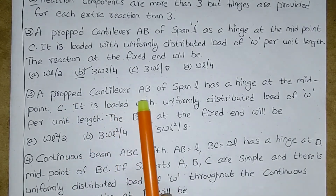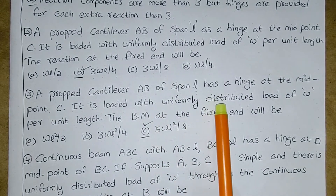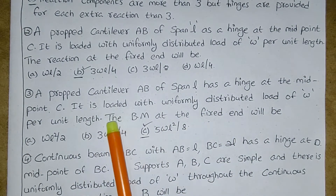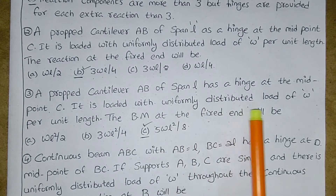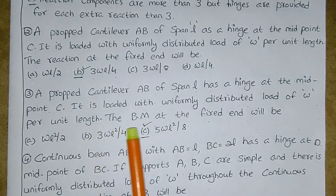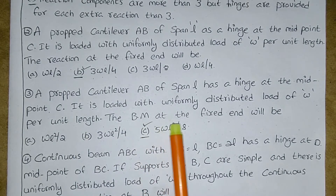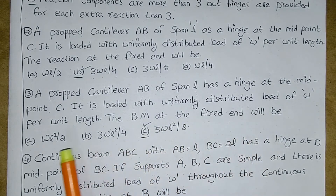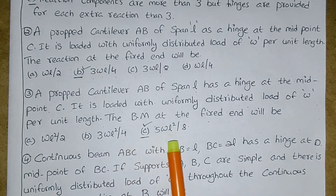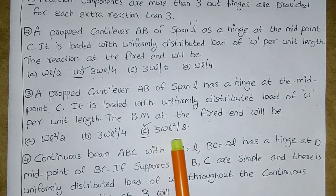Next: a propped cantilever AB of span L has a hinge at the midpoint C, loaded with uniformly distributed load of w per unit length. The bending moment at the fixed end will be: wL²/2, 3wL²/4, or 5wL²/8. The correct answer is 5wL²/8.